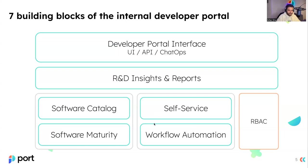The fourth pillar is automation for different workflows — for example, auto-terminating a resource consumed by a self-service action, or using the API of the software catalog as part of CI/CD jobs that need to deploy certain services. You might want to pass or fail a build according to data residing in your software catalog. The fifth pillar is RBAC — role-based access control — where you can decide what level of control each user has, like who can see specific data in the catalog and who can perform certain self-service actions.